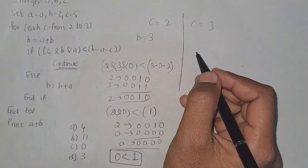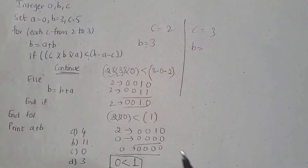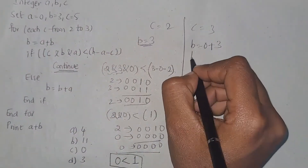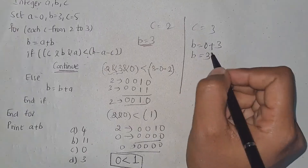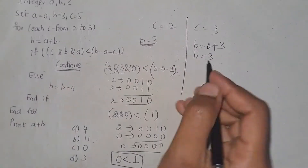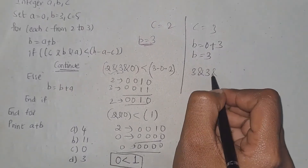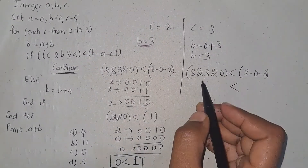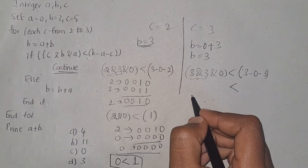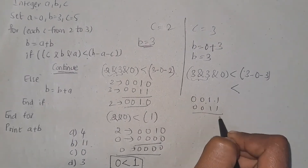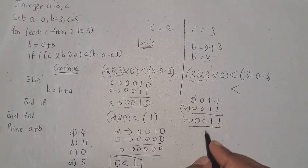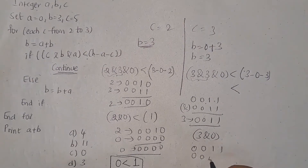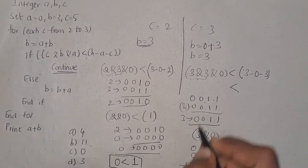Next iteration: b equals a plus b. a is 0 and b is 3, so b remains 3. Check the if condition: c is 3, 3 bitwise AND 3, bitwise AND 0, is less than 3 minus 0 minus 3. Perform bitwise AND between 3 and 3 — you will get 3. Then 3 bitwise AND 0 gives 0.